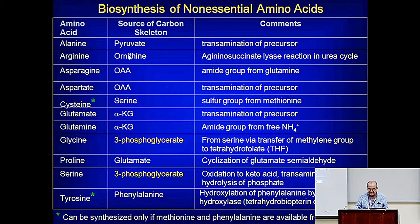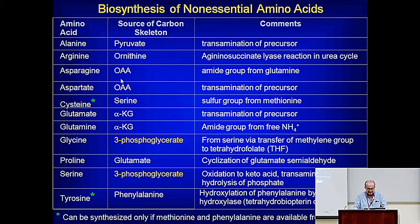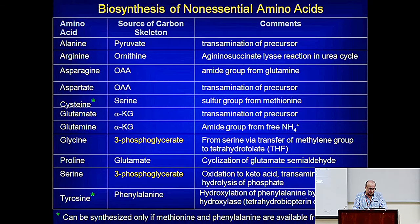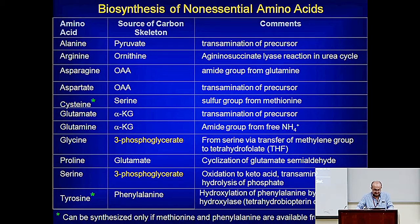Arginine is made by the urea cycle via arginosuccinate lyase. Asparagine is made from aspartate, and aspartate is in turn made from oxaloacetate through the AST reaction. Cysteine is derived from methionine — this is a key metabolic pathway. You go from methionine to homocysteine, then to cystathionine, and cystathionase breaks it down to cysteine. Serine is also required in the process of making cystathionine.